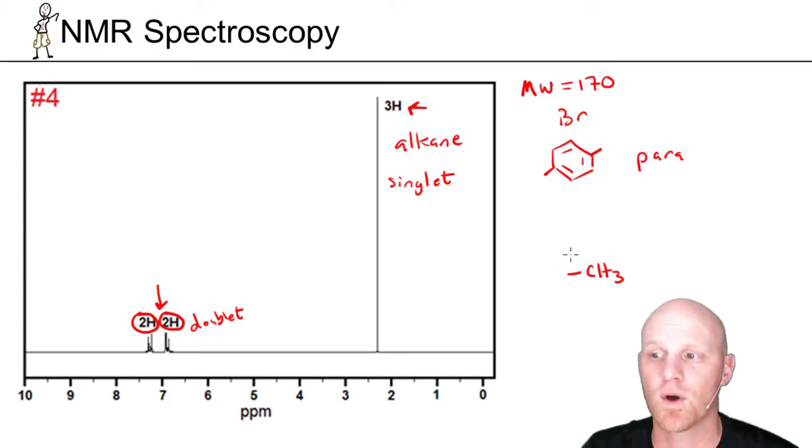We've interpreted all our signals. The question is, do we have every piece of the puzzle? We don't know the formula, but we know it's going to weigh 170. Bromine weighs 79. A benzene ring with four hydrogens on it—six carbons is 72 plus the four H's gets us to 76, and then a methyl group is going to weigh 15. If we add these all together, it actually does add up to 170.